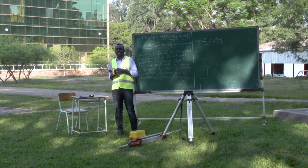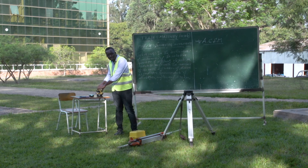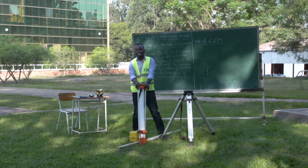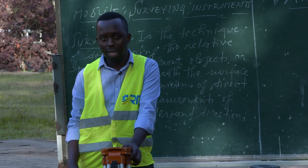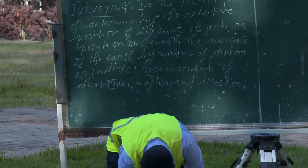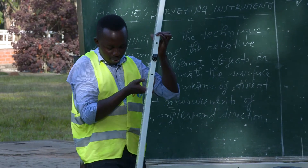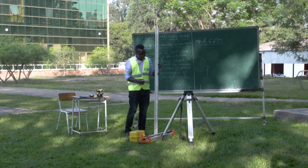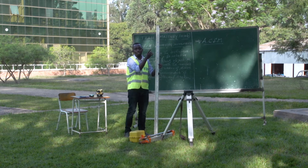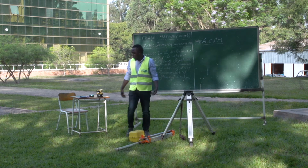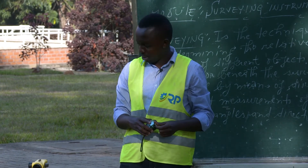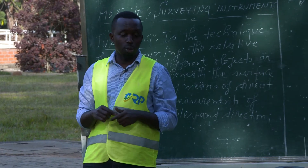This automatic level is not used by itself — it has accessories. It is used together with other accessories, including the tripod, which supports the automatic level. The automatic level is also used with a staff, also called a rod reading, which is used to take readings or observations. We also have a tape measure, which is used for taking measurements. Those are some accessories of an automatic level.